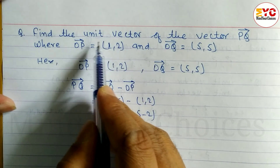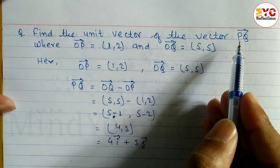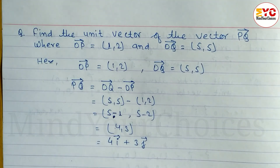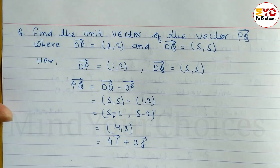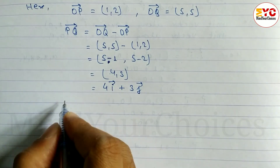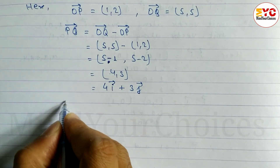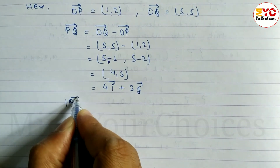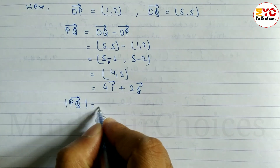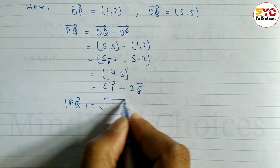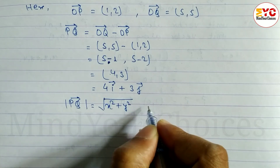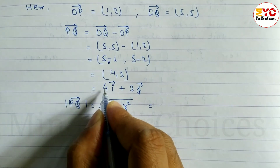We have to find the unit vector of PQ. So we have to find the magnitude of PQ also. The formula for magnitude is root under X squared plus Y squared.